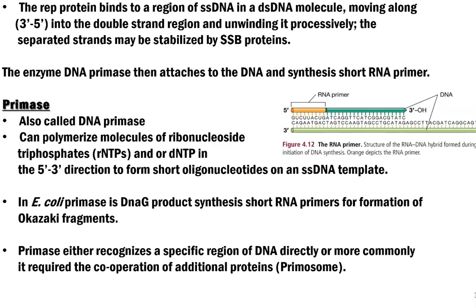The dna g gene product synthesizes short RNA primer stretches. This kind of primer formation is very important to extend DNA synthesis both in the leading strand and especially in the lagging strand in order to form the Okazaki fragments. We will see Okazaki fragments in detail in the coming classes.